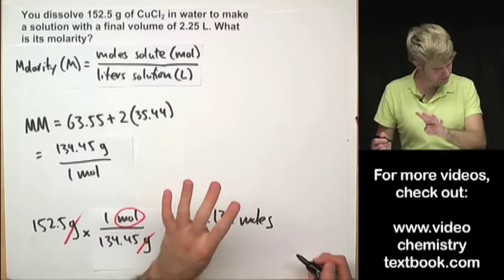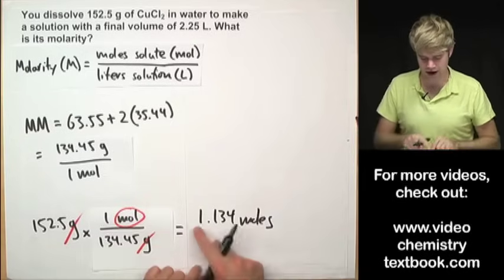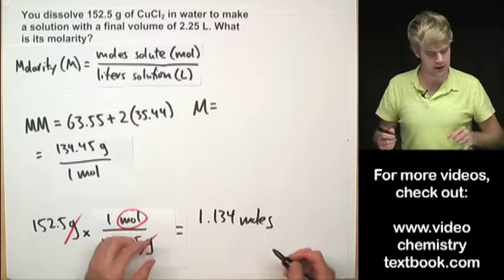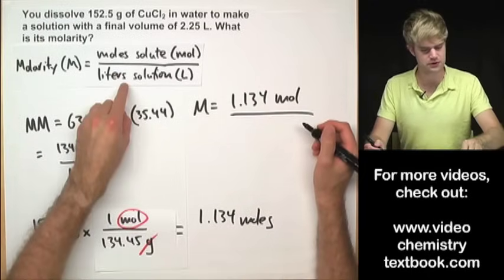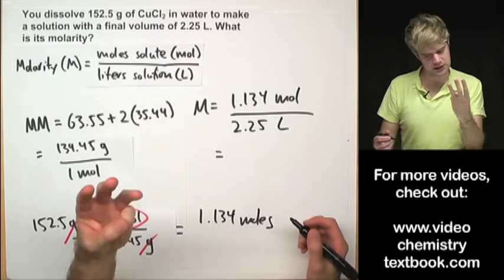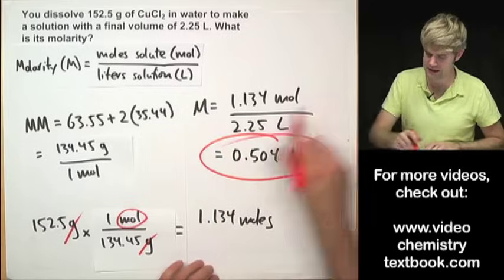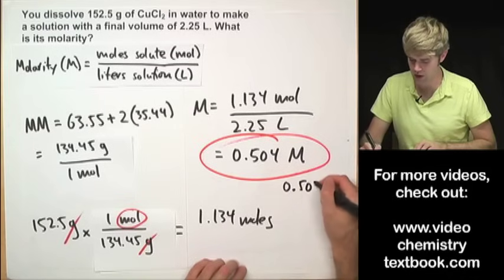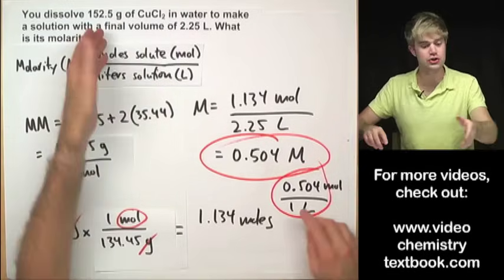Rounding to four significant figures, we have 1.134 moles of CuCl₂. Now we can calculate molarity: 1.134 moles divided by 2.25 liters of solution. Rounding to three significant figures gives 0.504 molar. That means there are 0.504 moles of CuCl₂ for every one liter of this solution.